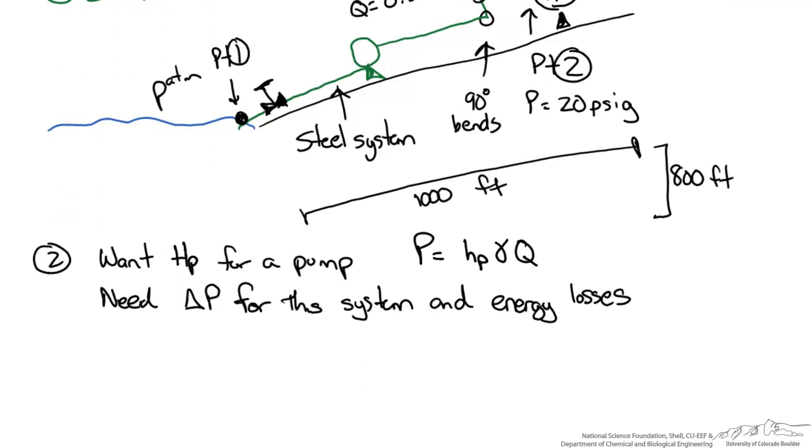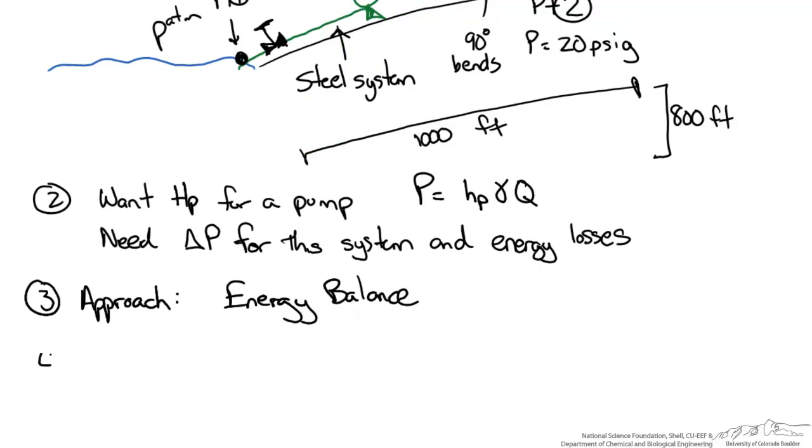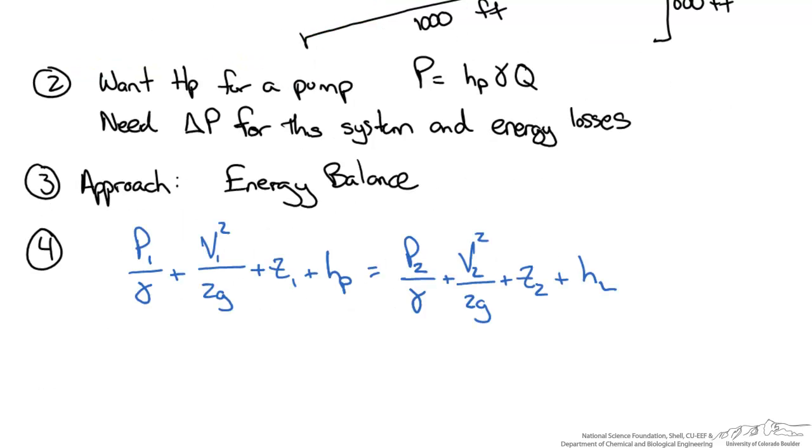The approach we're taking is an energy balance. We start with our general energy balance, which looks familiar to the Bernoulli balance but with two new terms: the shaft head related to power we're putting into the system mechanically, and the head loss due to piping system or components. As a refresher, P is pressure, gamma is specific weight, V is velocity, g is gravitational constant, and Z represents height with respect to our reference.